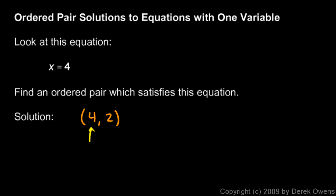So my x value there does in fact equal 4. So that ordered pair, 4 comma 2, is a solution to this equation. You could probably see that other things would also be a solution, such as 4 comma negative 5.